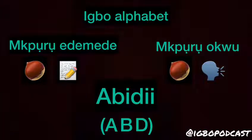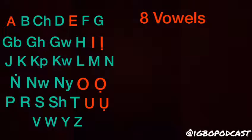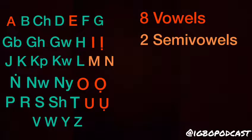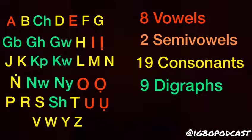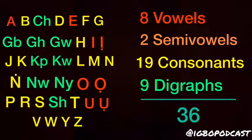The Igbo alphabet consists of 36 letters in total. There are 8 vowels, 2 semi-vowels, 19 consonants, and 9 digraphs. Let's take a deeper look into the vowels now. The vowels are known as Oda Ume — Oda meaning 'sound,' and Ume meaning 'breath.'